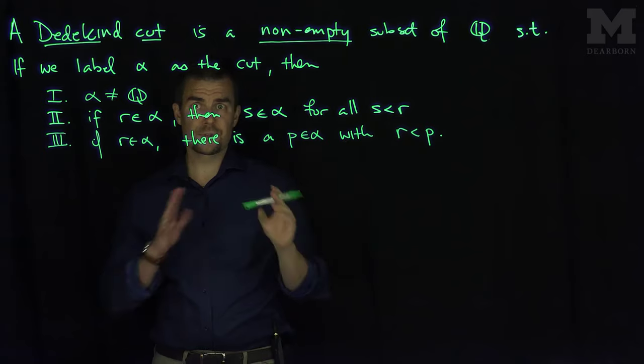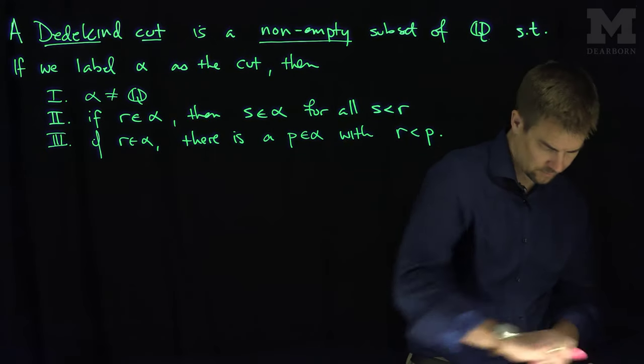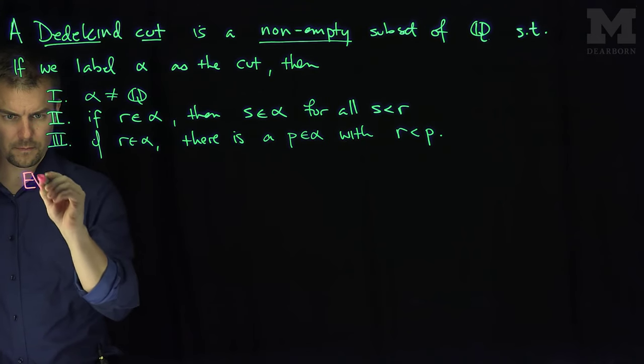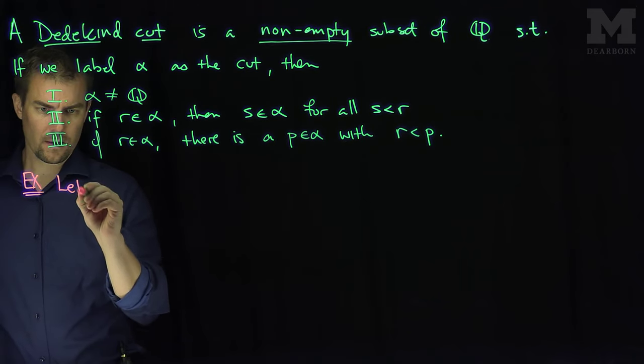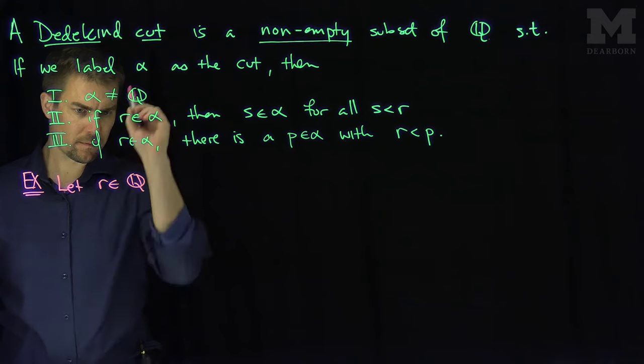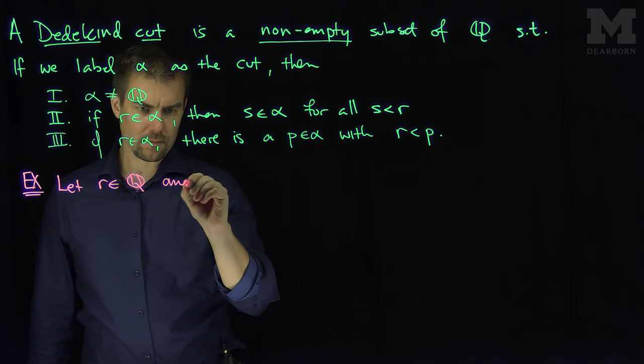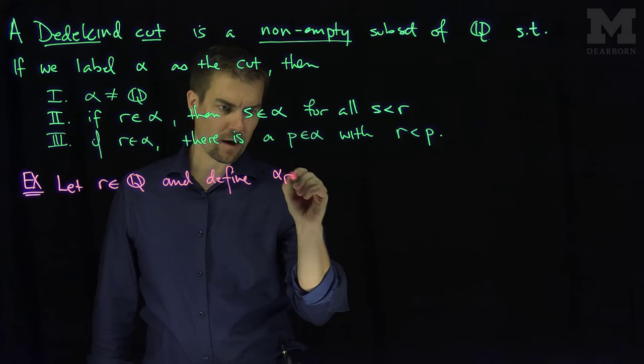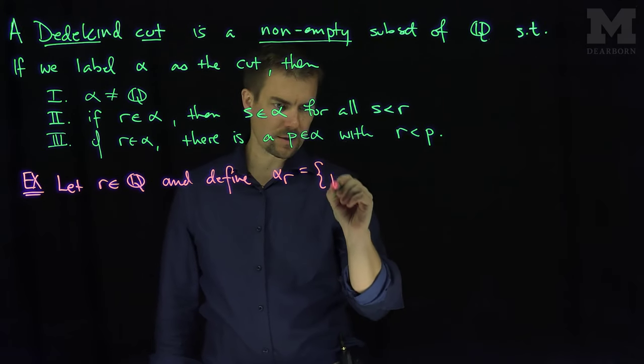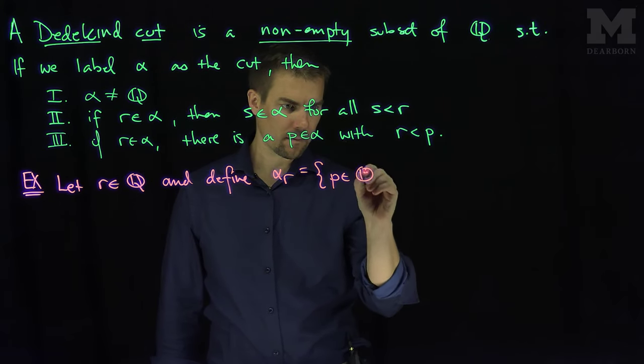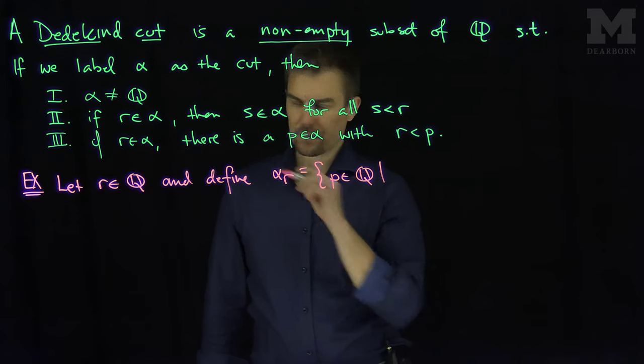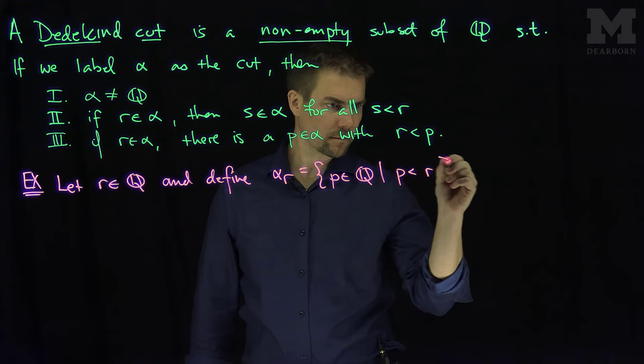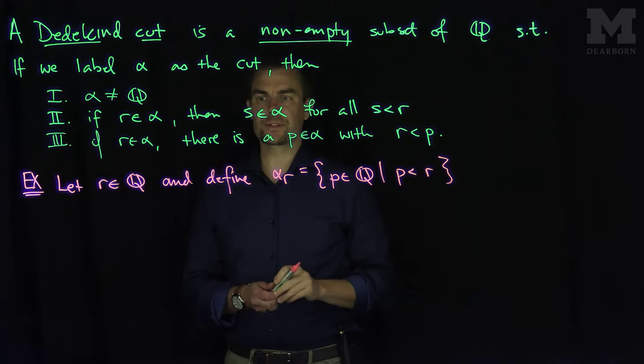These three definitions define what a cut is. So let me give you some examples of cuts. Let R be a rational number and define alpha R to be the set of rational numbers P such that P is less than R. I claim that this is a cut.